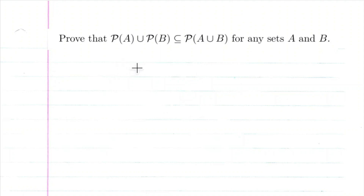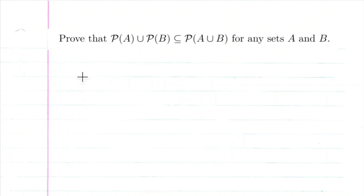For this proof, I can use if-and-only-if connectives between statements, but since this proof is only asking for this set being a subset of this set, I'm going to use implies instead of if-and-only-ifs. Throughout the proof, you'll see where I can't use an if-and-only-if, and that's why we can't have the power set of A union power set of B equal to the power set of A union B — that's why we're restricted to this set being a subset of this set.